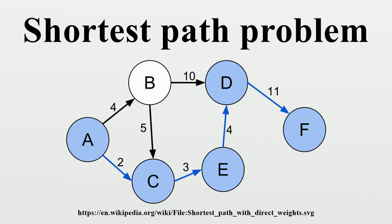The problem is also sometimes called the single pair shortest path problem to distinguish it from the following variations. The single source shortest path problem in which we have to find shortest paths from a source vertex v to all other vertices in the graph.